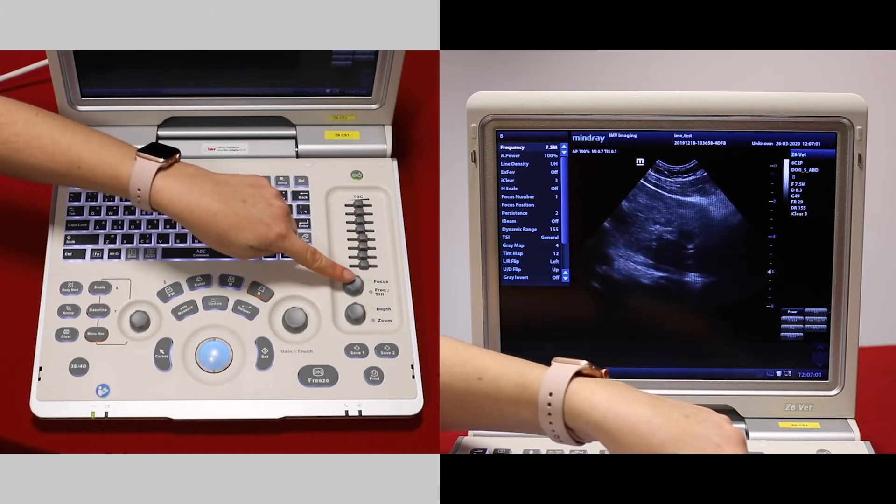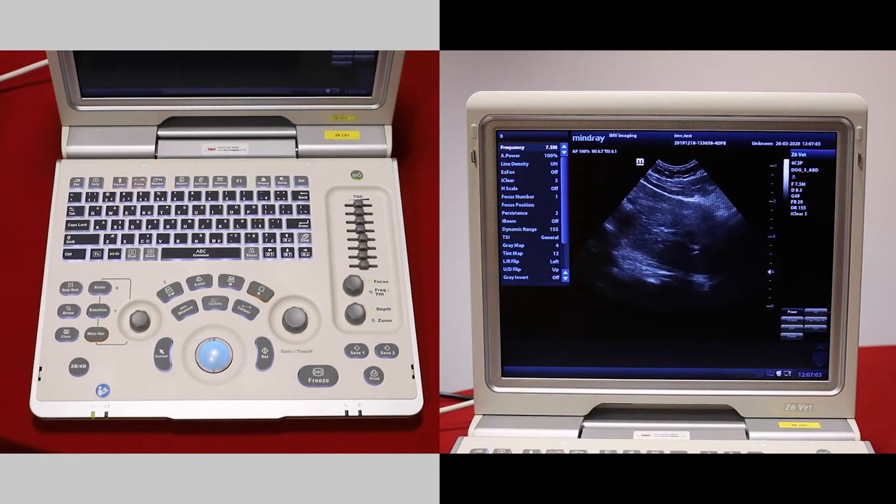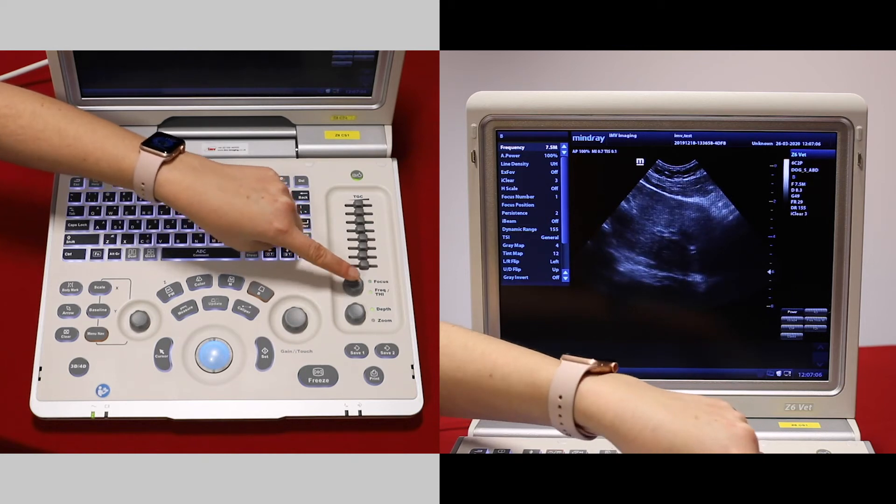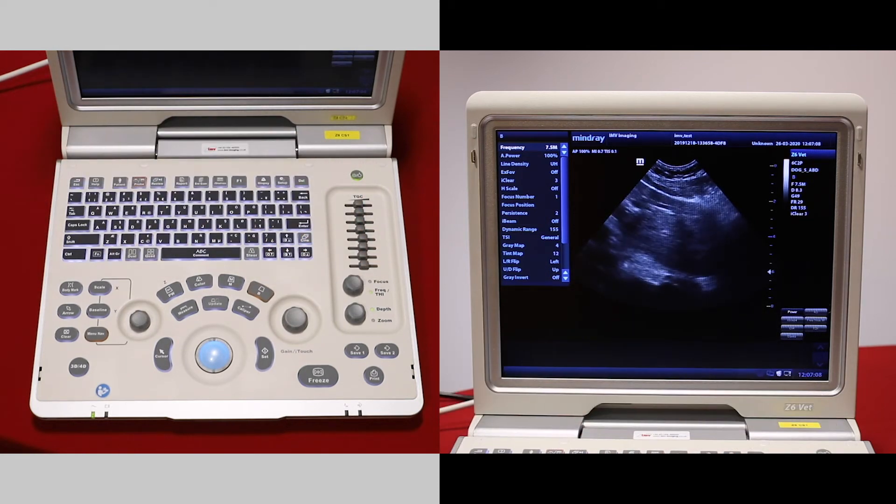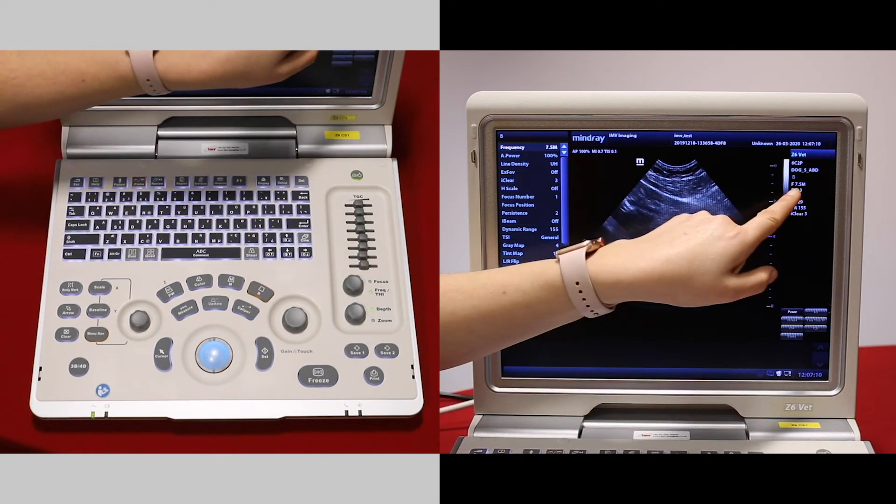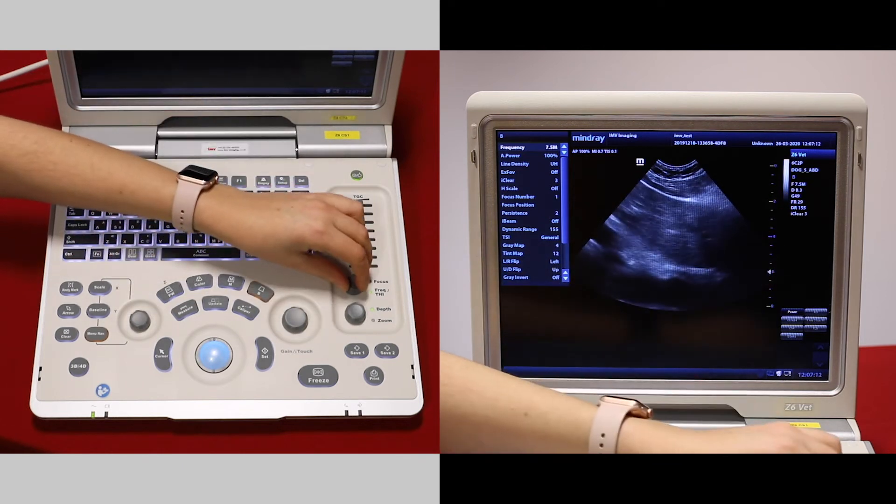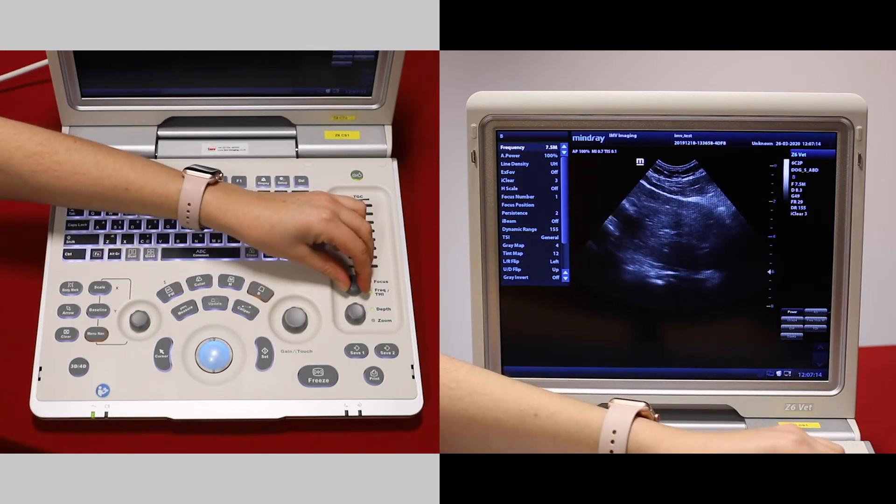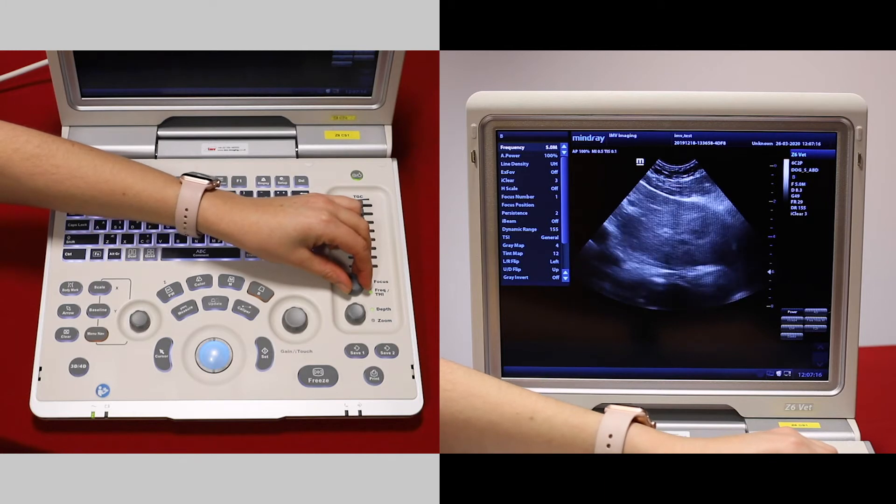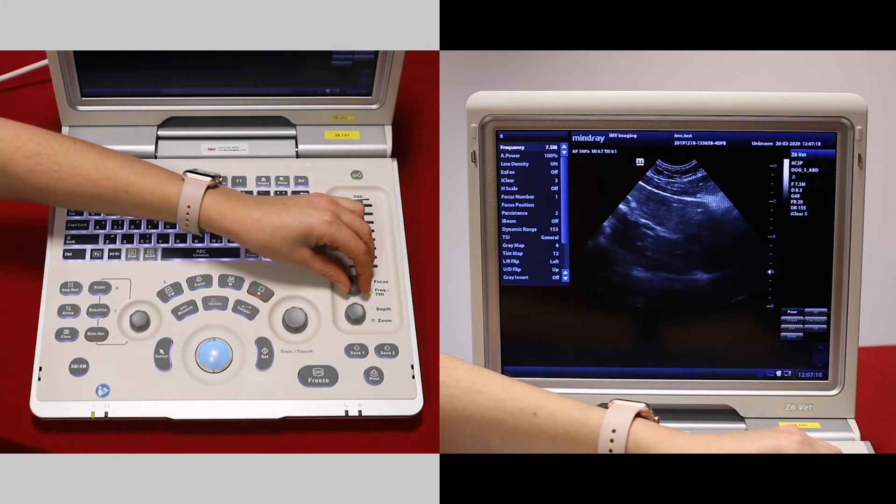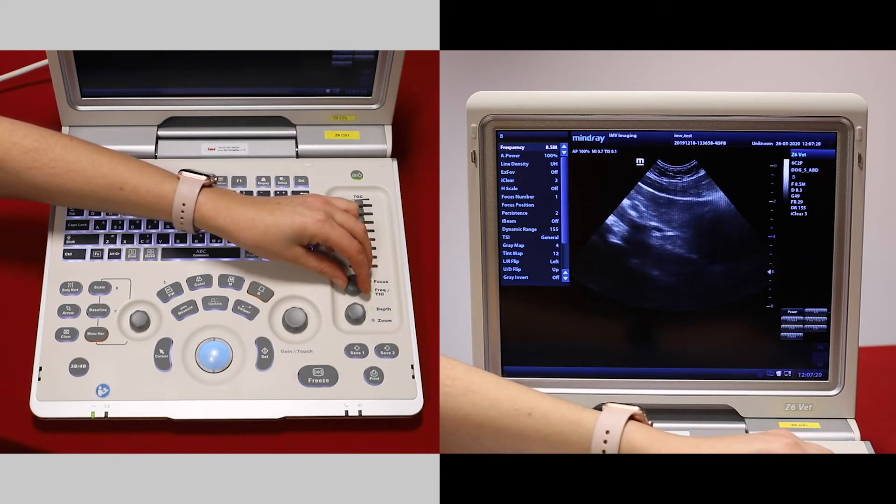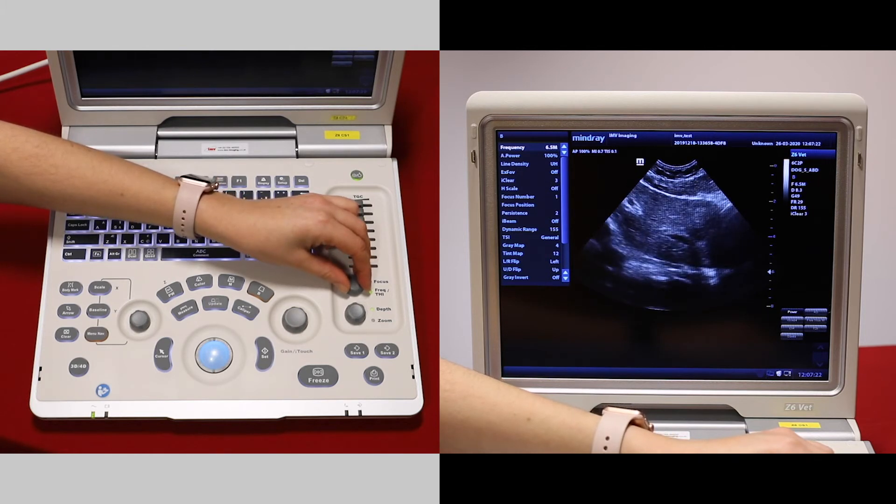The frequency and focal point button are on the same button here. Press this to change the frequency highlighted here. The frequency is also displayed on the screen. We can then increase or reduce the frequency. Increasing the frequency will give us better image resolution, but reducing the frequency will give us better penetration.